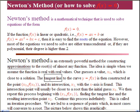One guesses some value of the root x naught, which we hope is close to the solution. The tangent line to the curve is constructed at that point, f of x naught, f of x naught. And its intersection on the x-axis, x of one, is determined. This intersection point will normally be closer to the root than the initial guess. We then repeat the process beginning with x of one, f of x of one, finding the tangent line and the resulting intersection point x of two. Continue this process on and on. This is called an iteration procedure and we're led to a sequence of points, which in many cases will converge to the root we seek.